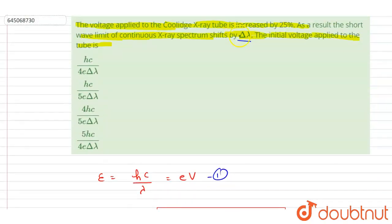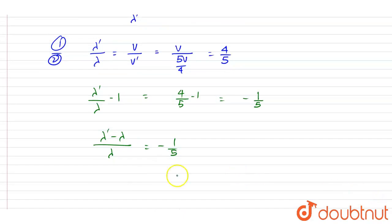So if you see here, this lambda dash minus lambda by lambda is this. So it is said that the decrease in lambda is this. So I can write down lambda minus lambda dash is delta lambda.